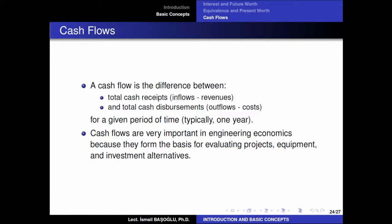A cash flow is the difference between the total cash receipts and the disbursements. What is a receipt? It is basically a revenue — an amount of money that you are going to get as inflow. So this is an income for your accounts. And what is a disbursement? It's an outflow — it is a cost, it is an expense. So the cash flow is written in net terms: the difference between the total cash receipts and the total cash disbursements in a given period of time.